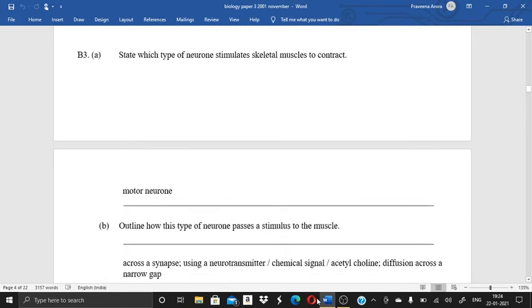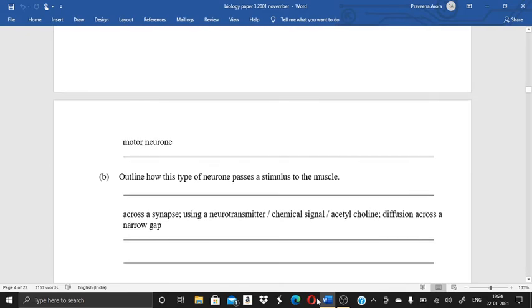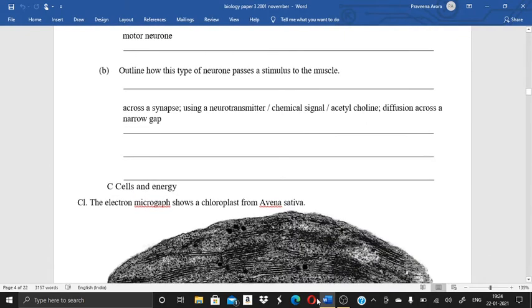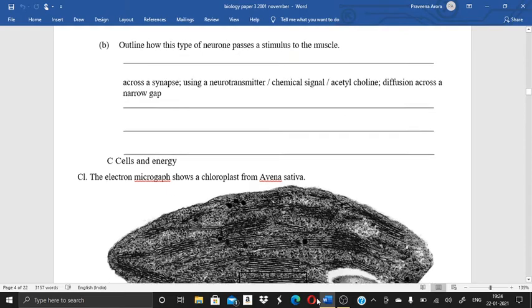Then the next question is, outline the effect of adrenaline on the activity of muscles. Next question, state which type of neuron stimulates skeletal muscles to contract, that is motor neuron. Next is, outline how this type of neuron passes a stimulus to the muscles.